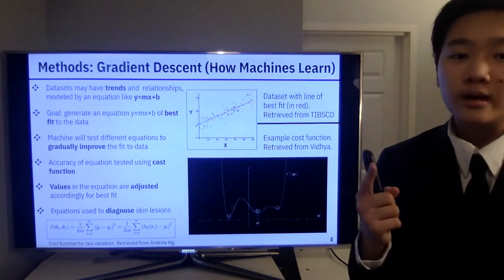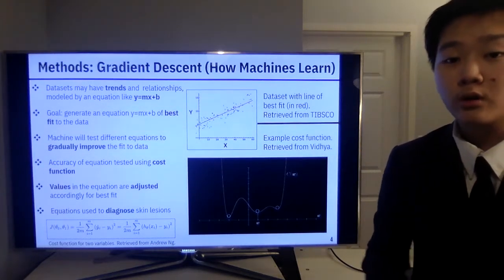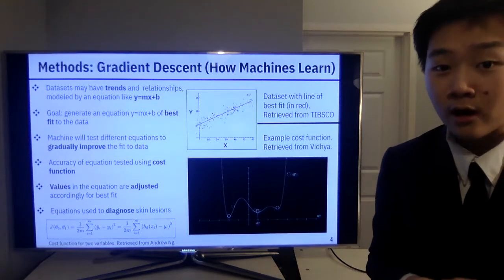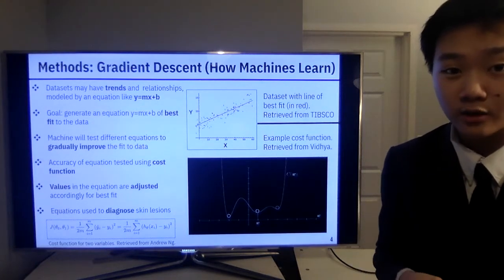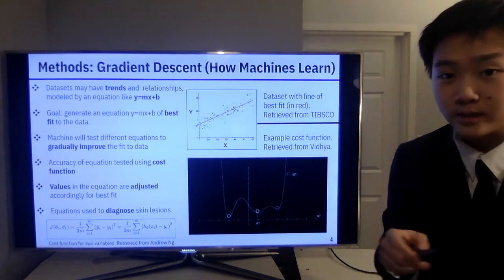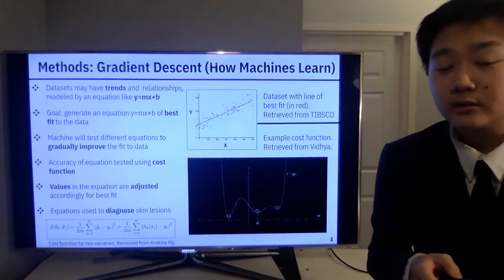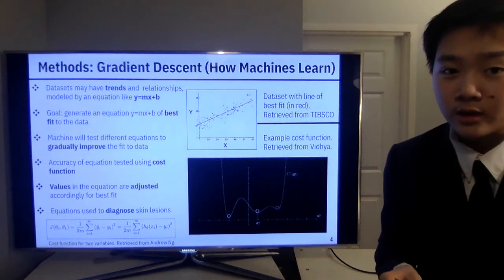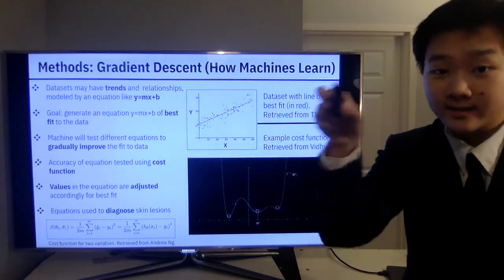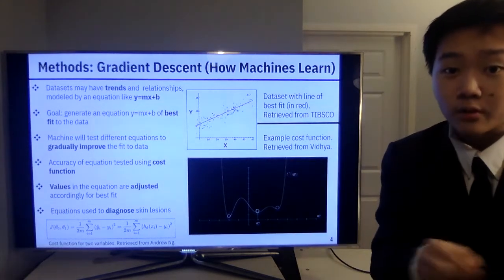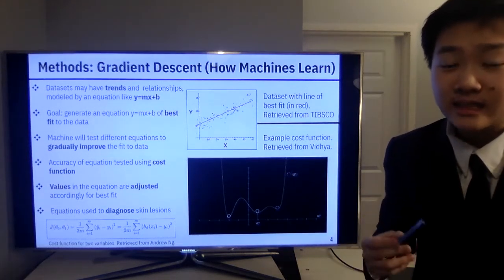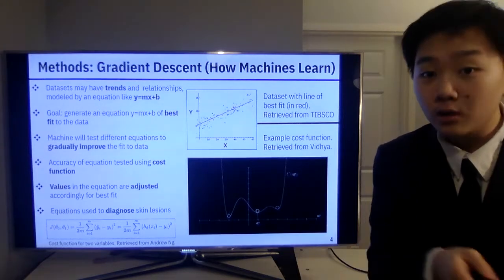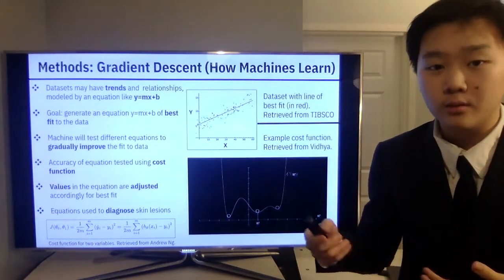There will only be one minima that is the lowest point overall, which we call the global minima. Based on where our starting point is on the graph, our ball will roll to a different minima, but we want it to roll to the global minima. In a graph with many oscillations or many dips, it will be increasingly difficult to find the global minima because there are so many local minima competing with it.